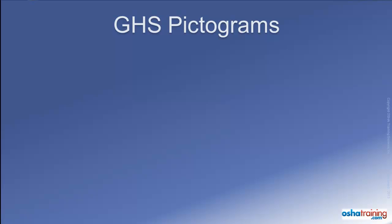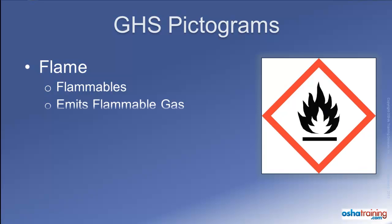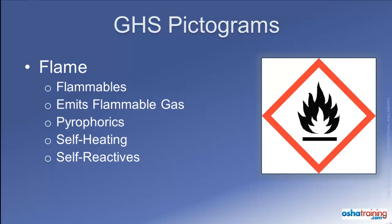The first pictogram is an icon of a flame. This is associated with flammable liquids, solids, and aerosols, and will appear on labels for those products. This pictogram will also appear on labels of products that emit flammable gases, those which are pyrophoric — meaning the chemical can possibly ignite within minutes of being exposed to air — self-heating chemicals, self-reactive chemicals, and organic peroxides, which are found in many products such as catalyst and curing agents.